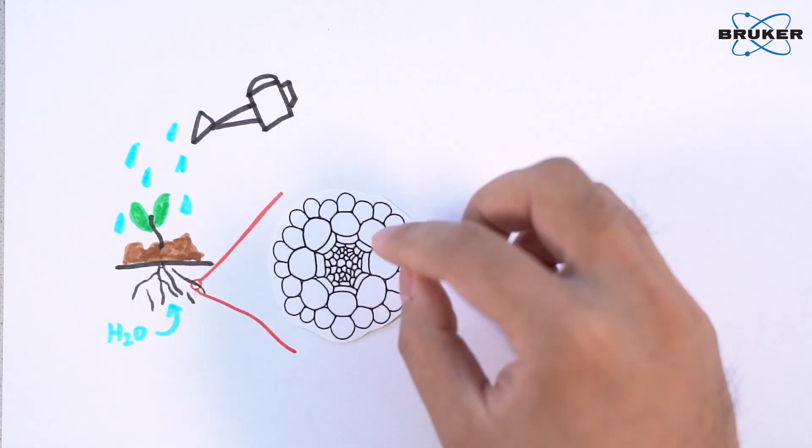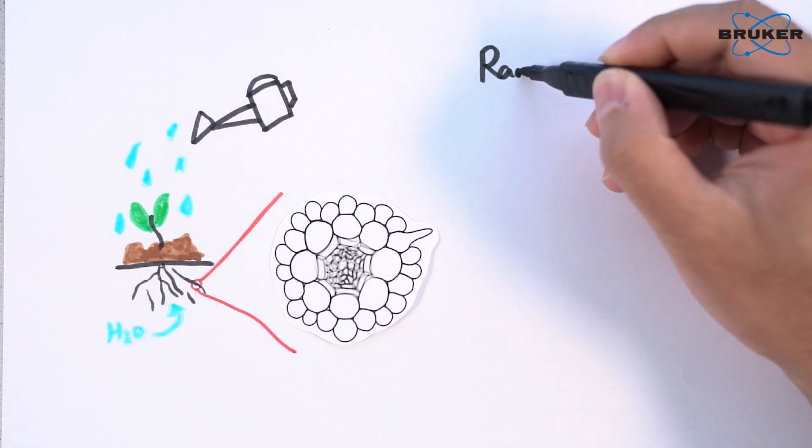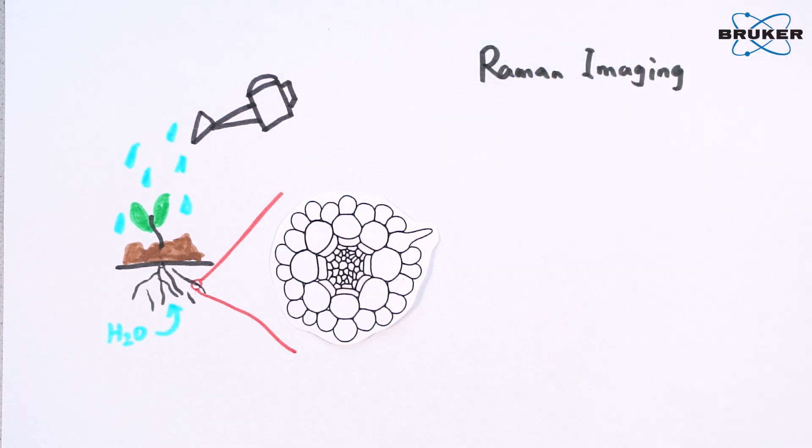Although the root cellular structure is no mystery to a microscope, it is still impossible to see the colorless water between all the cells at the micrometer level. However, a research team at Nottingham University made the water transportation mechanism visible by applying Raman imaging.